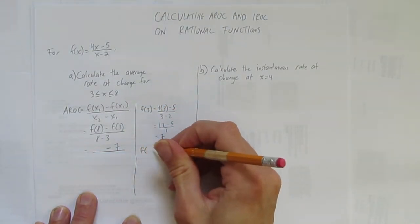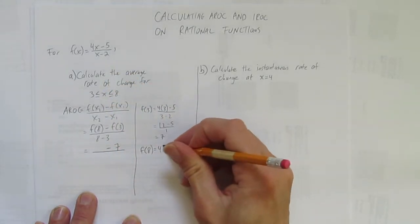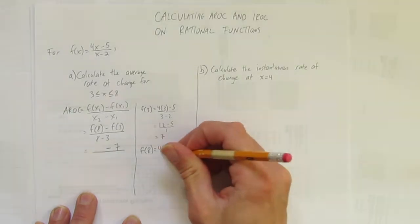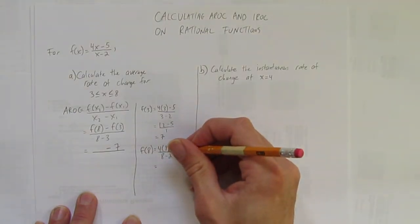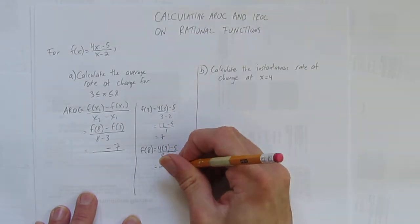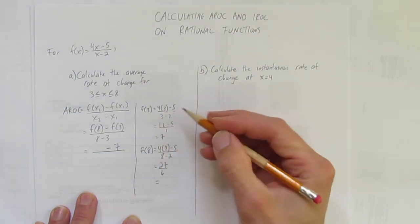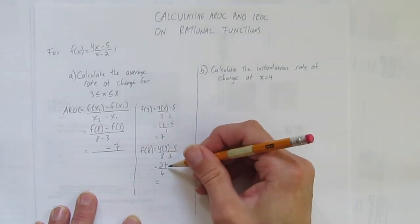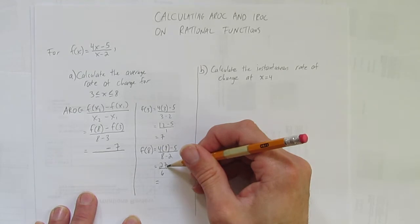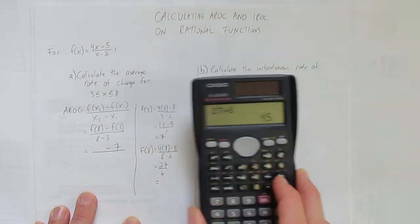And on the side I'm also going to calculate f(8). Just sub 8 into the function. 4 times 8 minus 5 over 8 minus 2. What's 4 times 8? 32. Minus 5 is 27. And 8 - 2 is 6. In the last one, when I was doing f(3), you'll notice I calculated 4 times 3 and didn't subtract 5. It doesn't matter. As long as you show some work that you're first subbing in, then you're simplifying, now we'll solve.